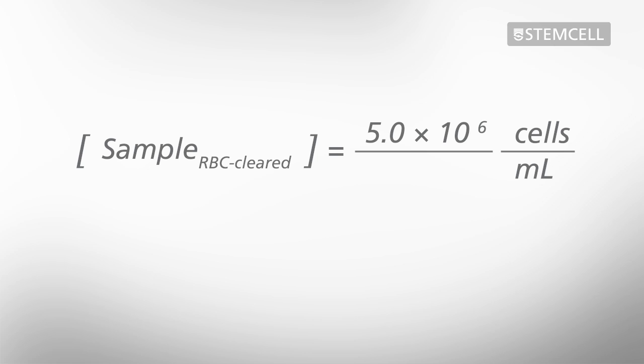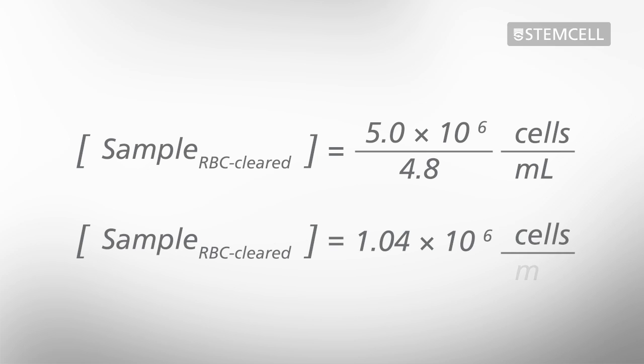then the cell concentration after HetaSep will be 5.0 times 10 to the 6 cells per ml divided by the dilution factor, 4.8. This gives you a cell concentration of 1.04 times 10 to the 6 cells per ml.